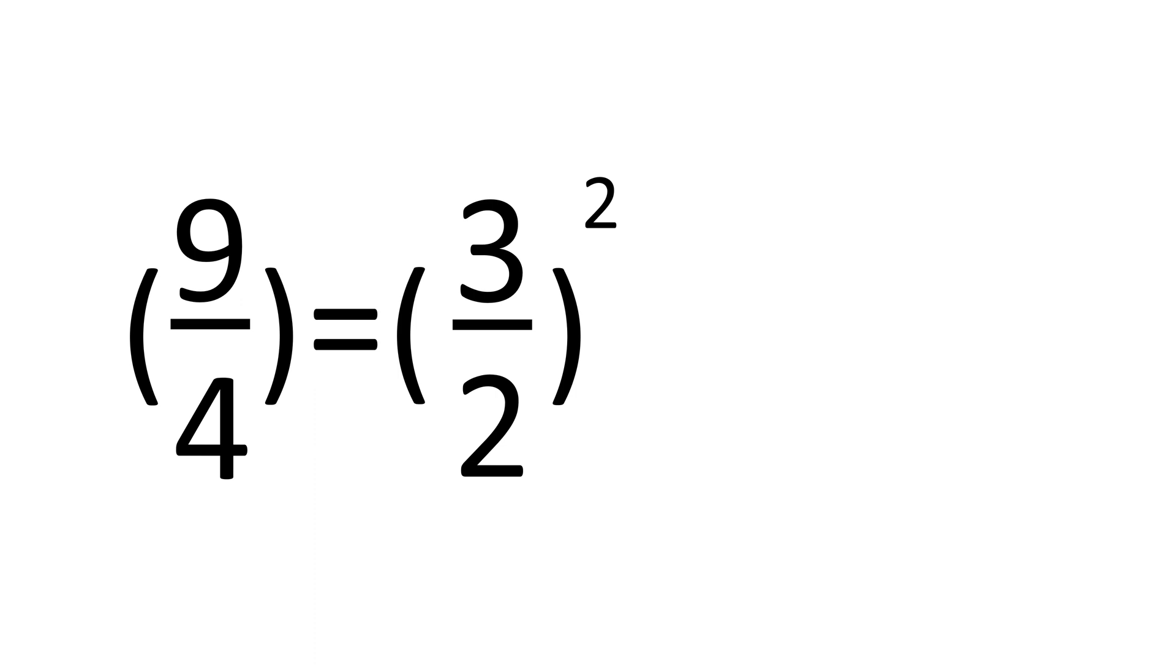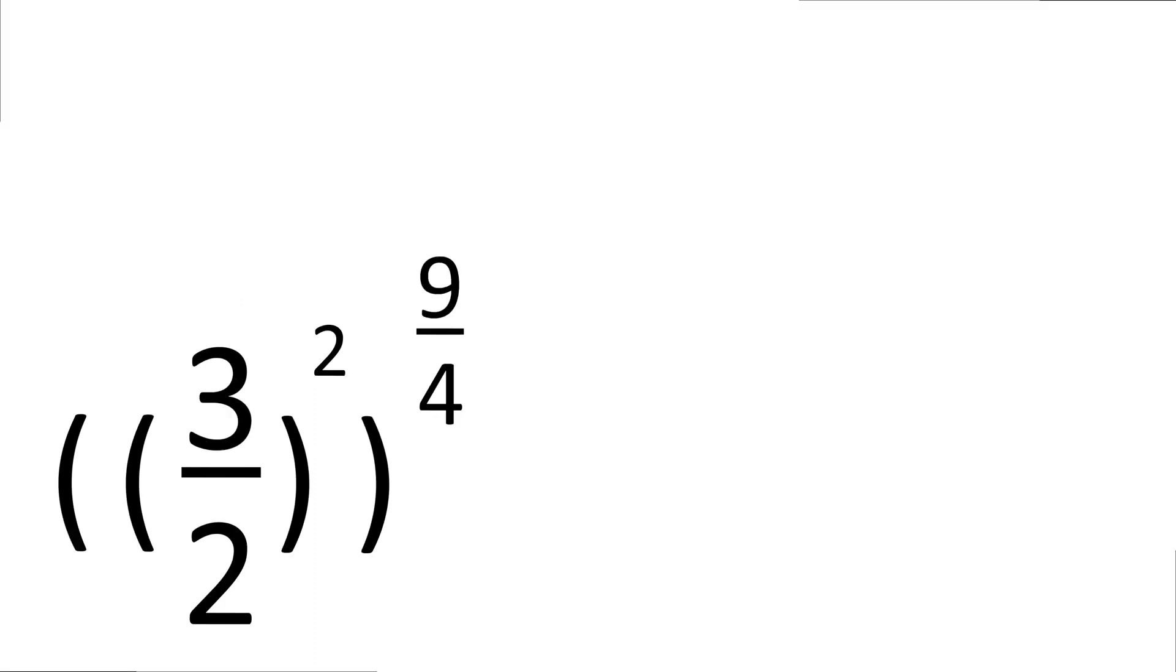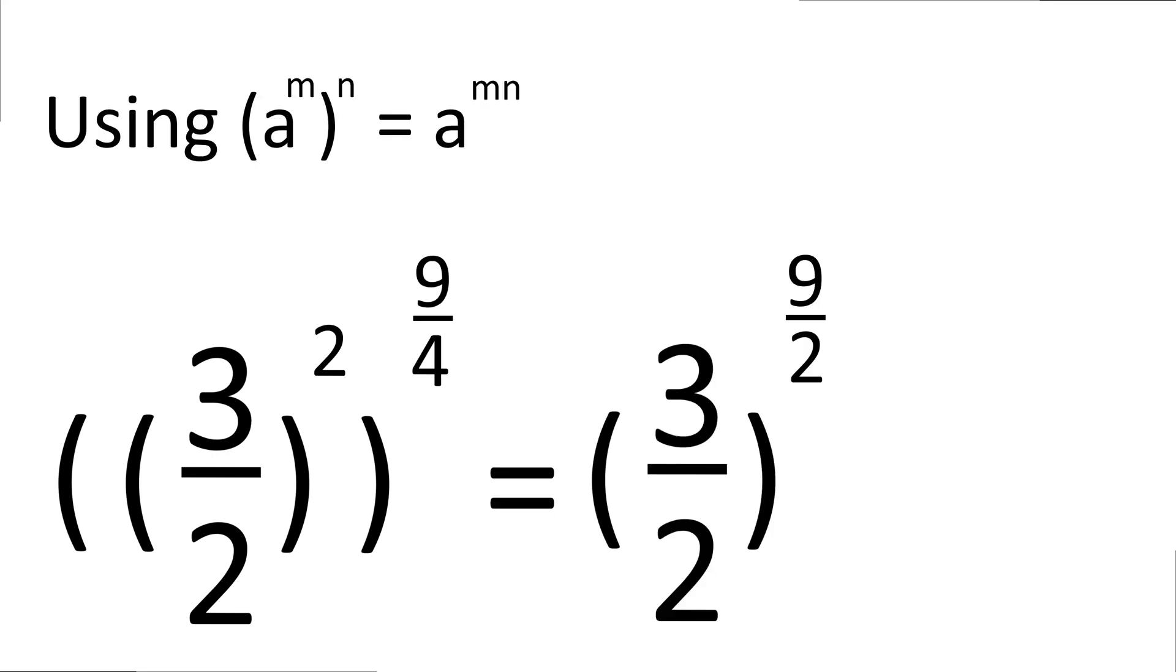First we note that 9 over 4 is 3 over 2 all squared. If we substitute that into the base and then we use this identity we get 3 over 2 to the power of 9 over 2.